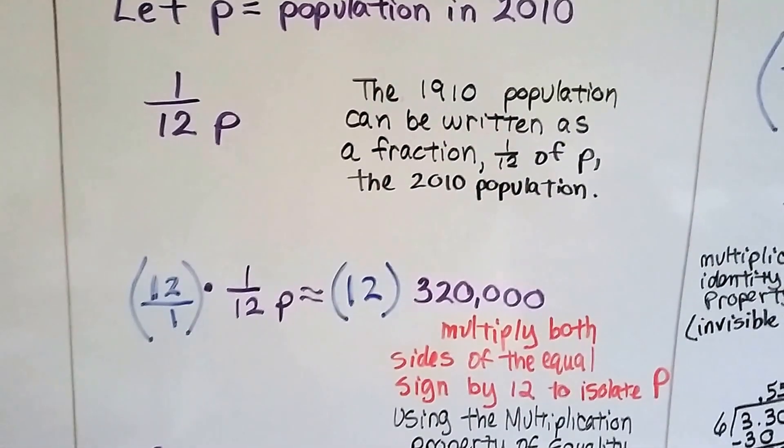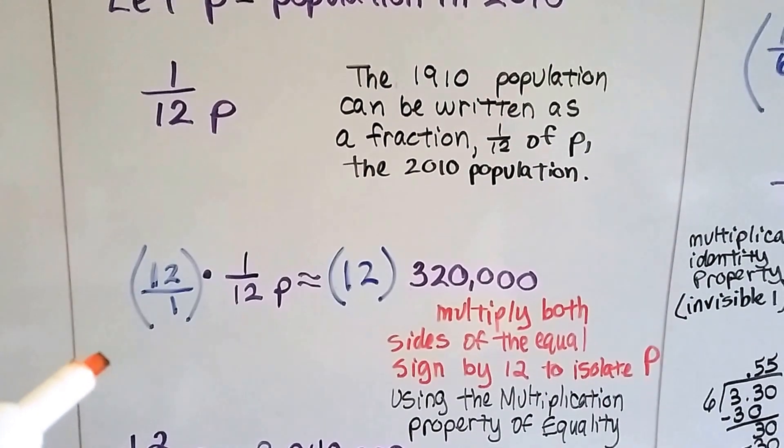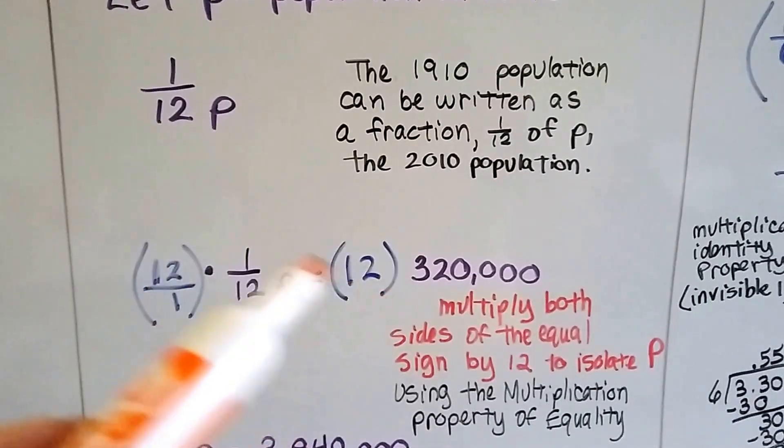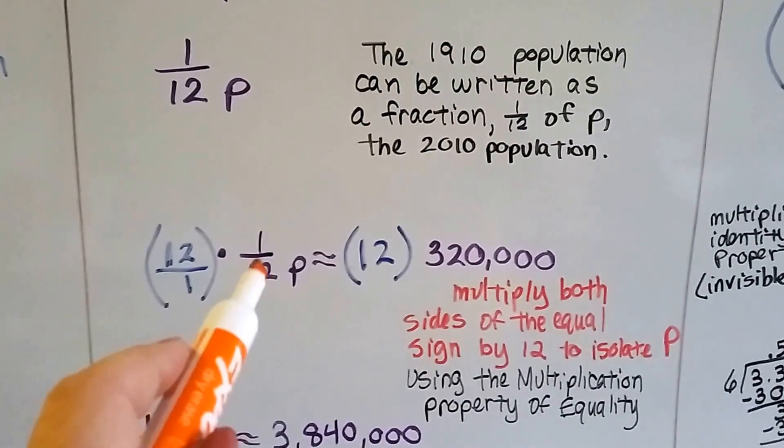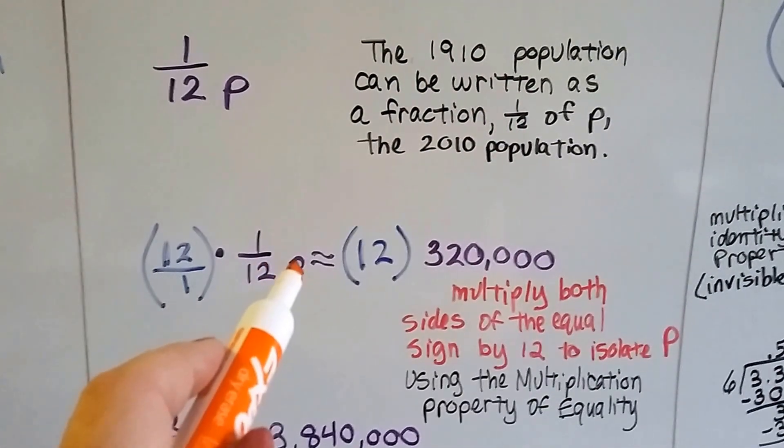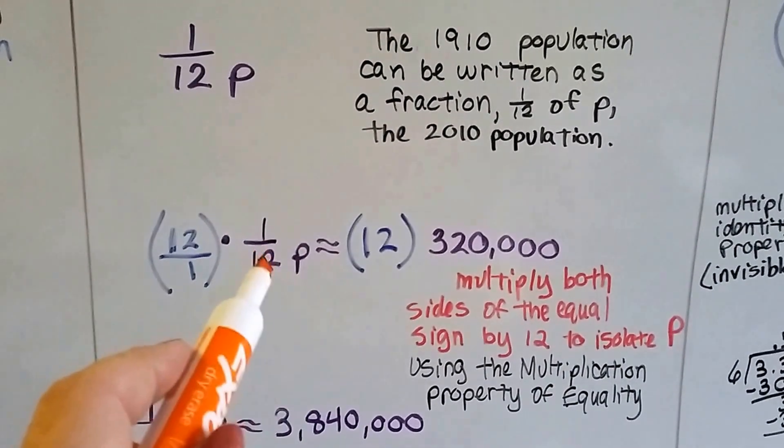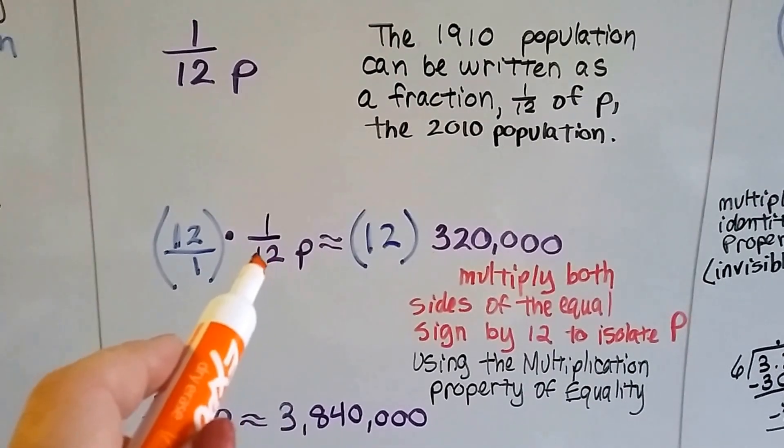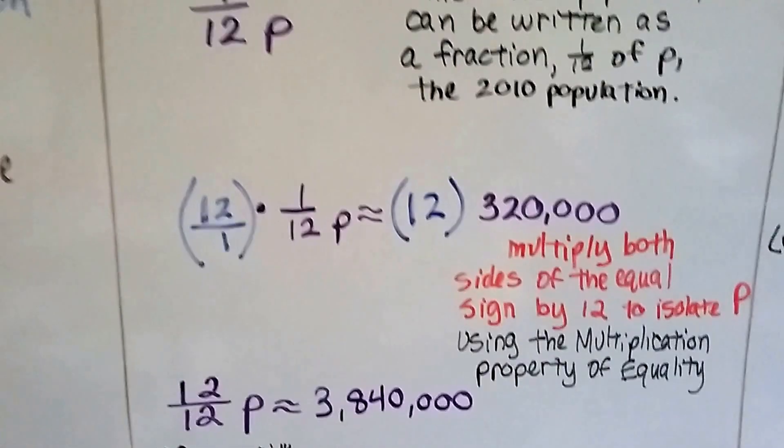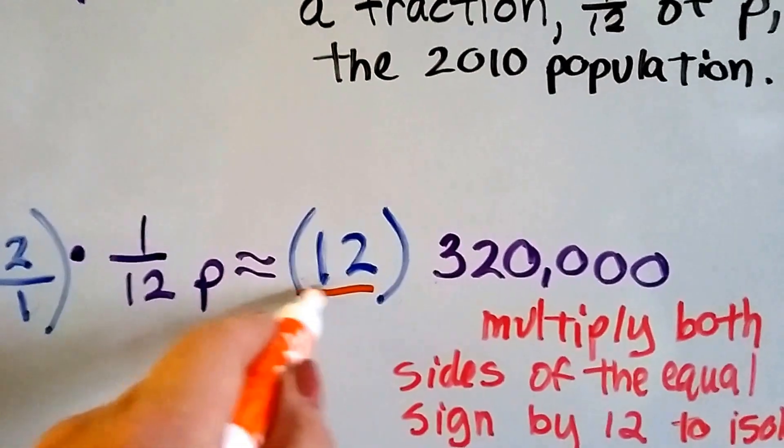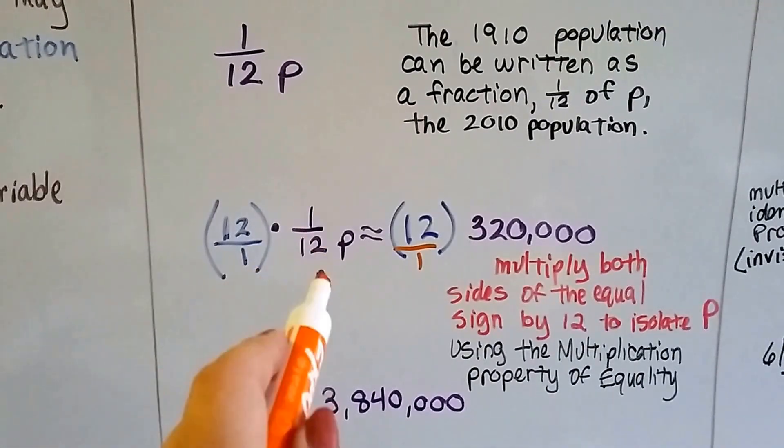We use the multiplication property of equality, and we multiply both sides of the equation by 12. Now, why did I pick 12? Because that's the one that's on the same side as the variable, and we need to get this variable alone and isolate it. So we need to get rid of this one-twelfth. So, by multiplying both sides by the reciprocal of one-twelfth, so we can actually put a little one underneath here to make it the reciprocal of one-twelfth.